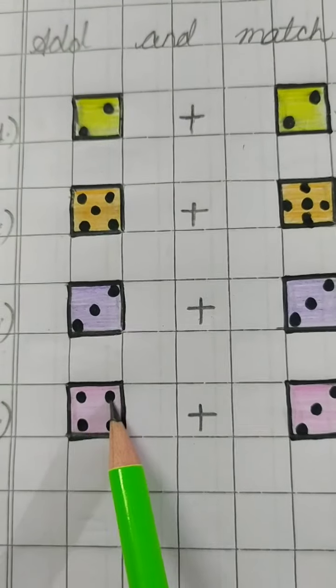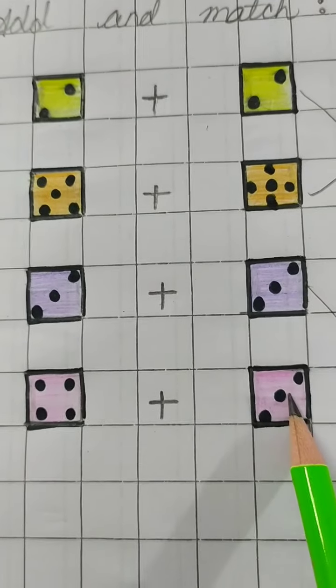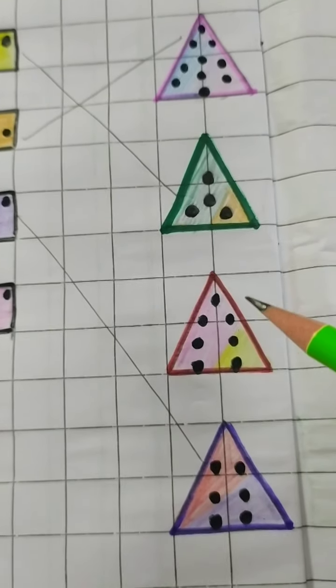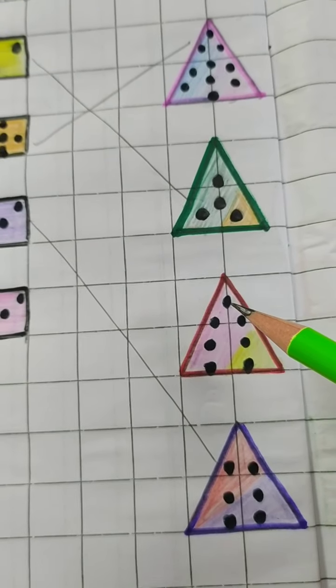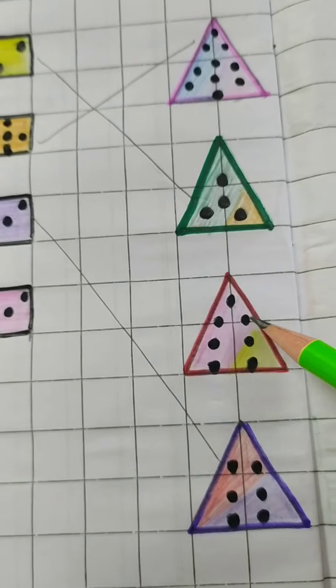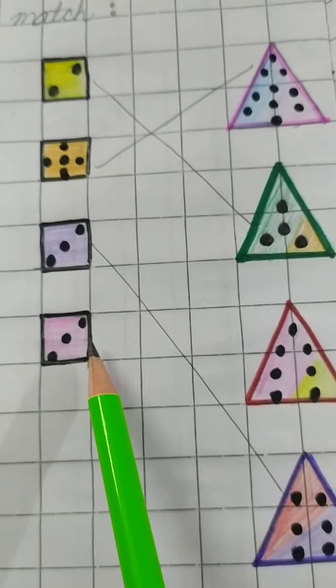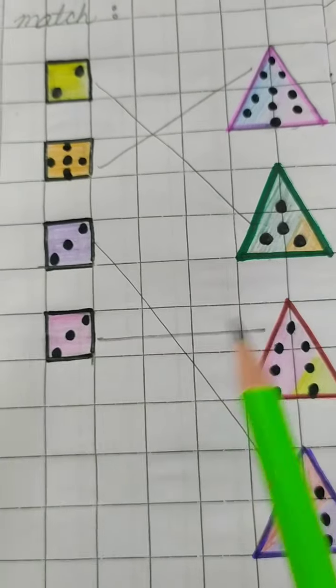Now see the fourth one. 1, 2, 3, 4, 5, 6, 7. Let's see. Aray, yaha pe toh sif ek triangle bacha hain. Just see, isme kitna hain. 1, 2, 3, 4, 5, 6, 7. Yes, 7. So we'll draw the line like this.